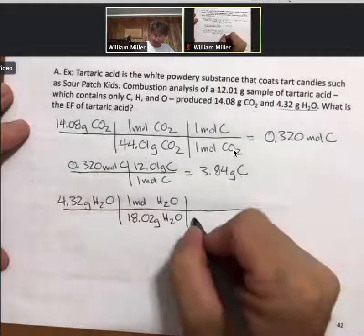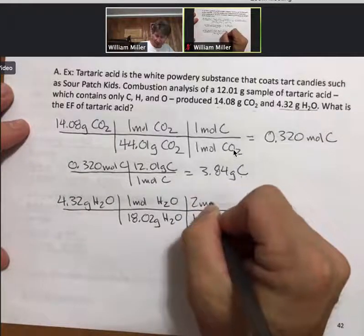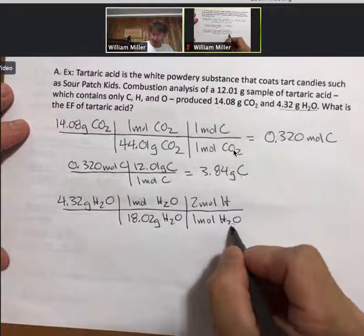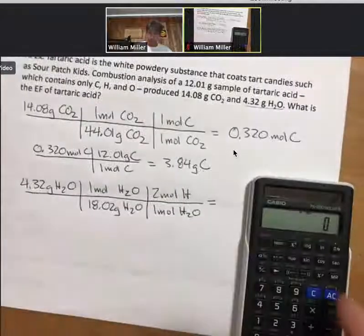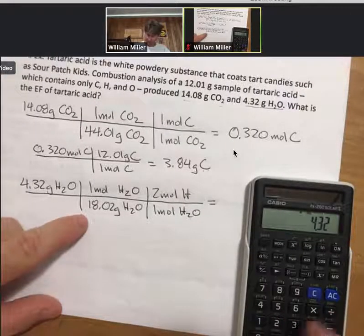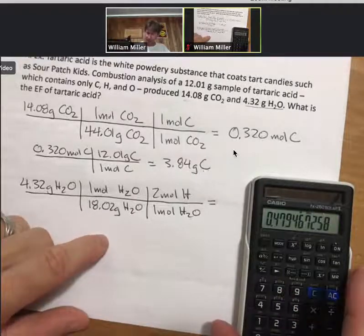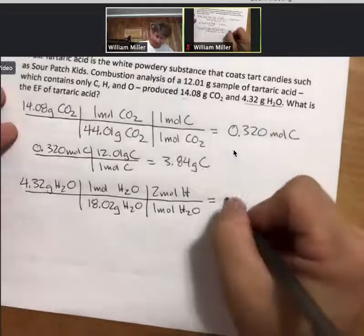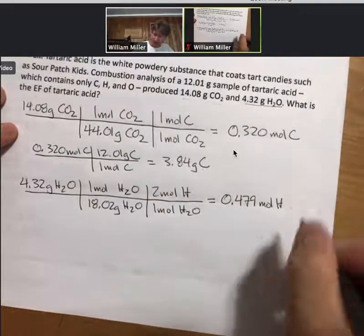And then this time, for every one mole of H2O, there are actually two moles of H, and that's because there's this subscript 2 in here. 4.32 divided by 18.02 times 2, 0.479 moles of hydrogen.